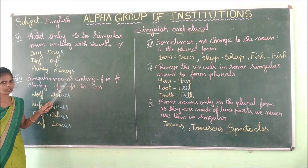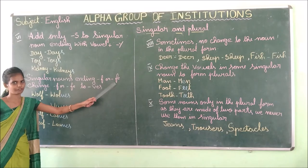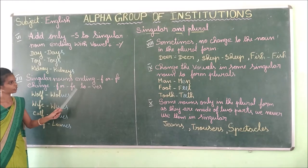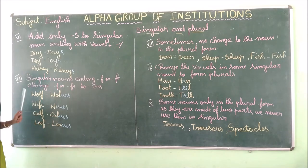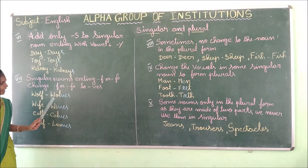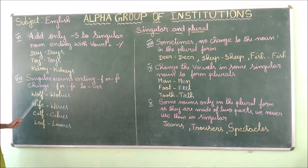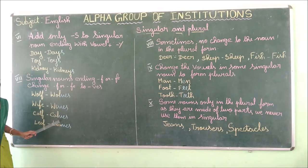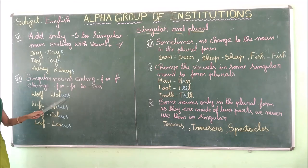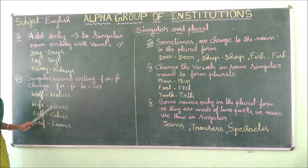Seventh rule: singular nouns ending in F or FE — change F or FE to VES. Remove the F or FE and add VES. Examples: wolf→wolves, wife→wives, calf→calves, leaf→leaves.